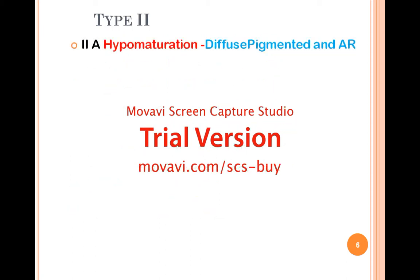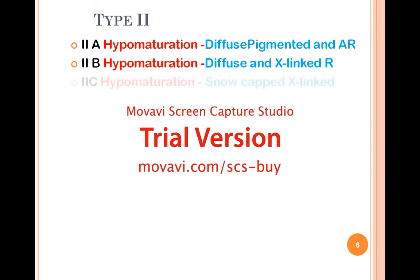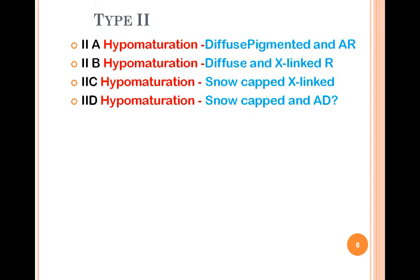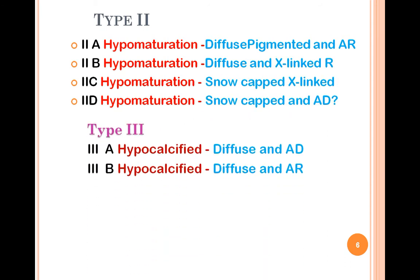Type 2 has its own subclassifications: Type 2A, B, C, and D. These subtypes are associated with hypomaturation, diffuse pigmentation, autosomal recessive, X-linked recessive, and autosomal recessive inheritance patterns.